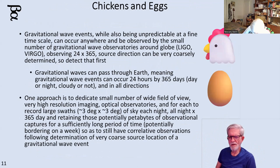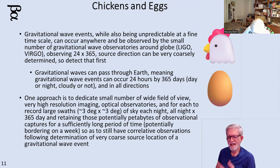As a side note: the Unicode character set that computers use actually has characters for a chicken and an egg — the chicken and egg graphic used here comes from the Unicode font set, illustrating the question of which came first: the gravity wave event or the optical event.